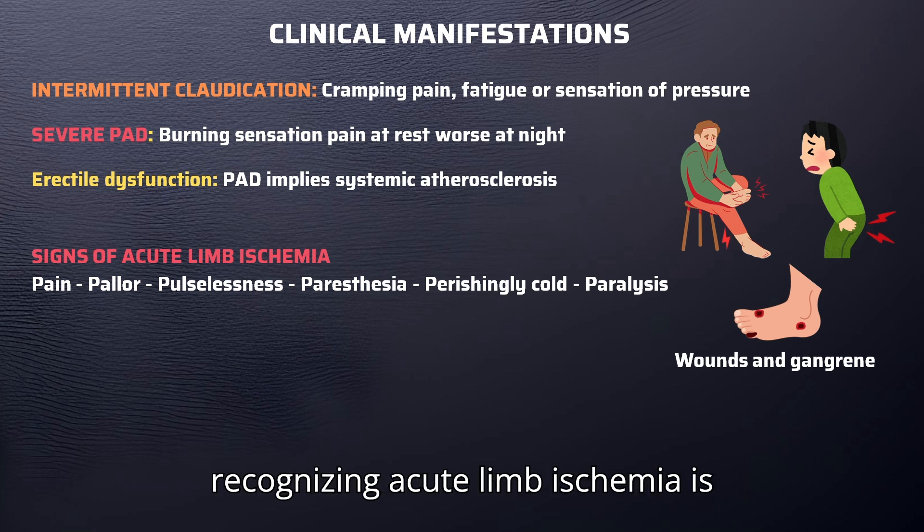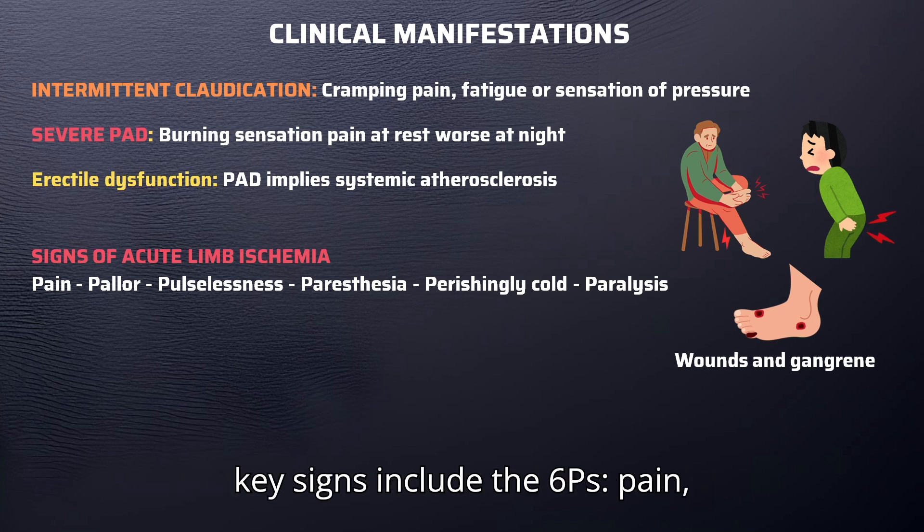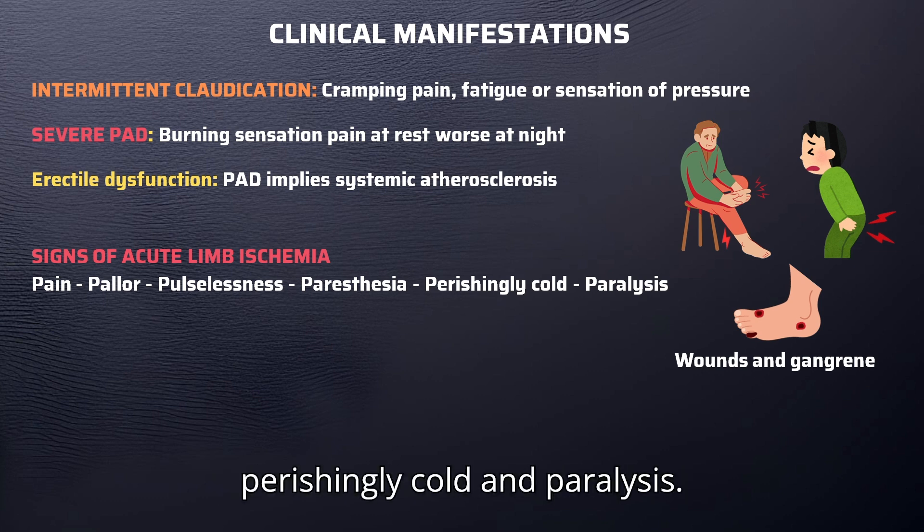Recognizing acute limb ischemia is crucial to preventing limb loss. The key signs include the six Ps: Pain, pallor, pulselessness, paresthesia, perishingly cold, and paralysis.